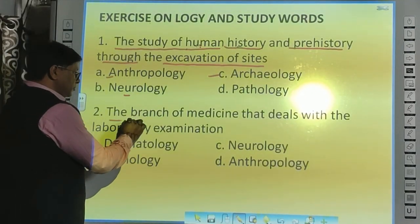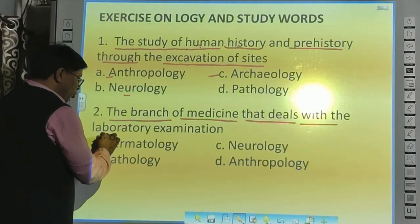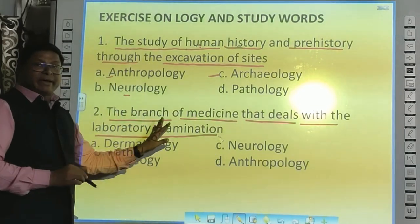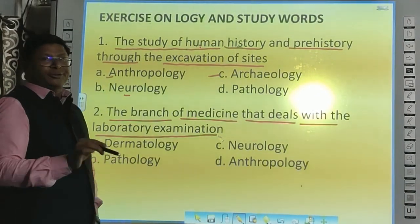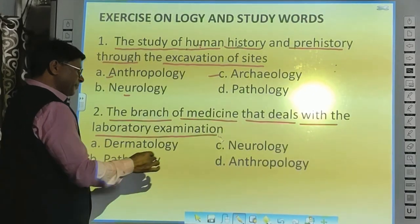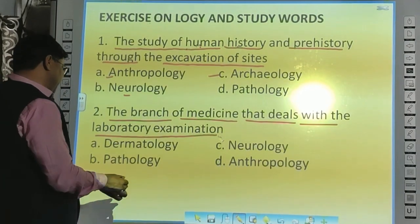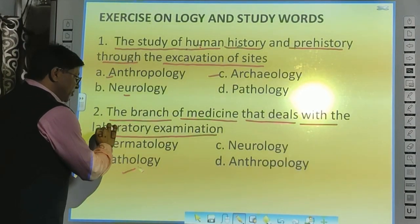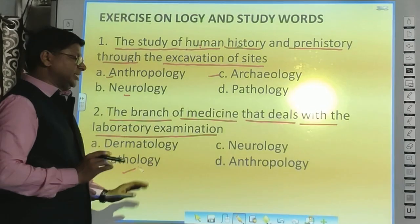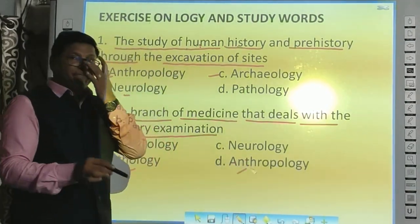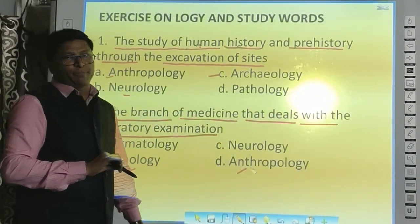Next question: the branch of medicine that deals with laboratory examination — this is your clue: laboratory examination. Which branch of medicine will this be? It will not be Dermatology — Dermatology is for skin disorders. It will not be Neurology — Neurology is for nervous system disorders. It will be Pathology — रोग अध्ययन विज्ञान — that is Pathology. And Anthropology — मानव विकाश विज्ञान — the study of humankind's development, that is Anthropology.